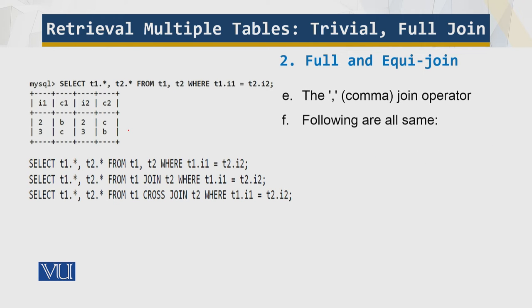So the full or the equi-join. This comma is the join operator. The join and cross join types are equivalent to the comma join operator. For example, the following statements are all the same.